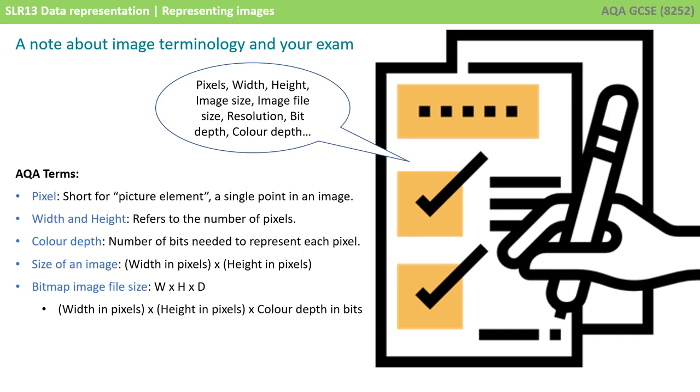So, for AQA, a pixel means a single point in an image. Width and height is referring to the number of pixels. The colour depth is the number of bits needed to represent each pixel. The size of an image refers to the width in pixels times the height in pixels, whereas the bitmap image file size is the width in pixels times the height in pixels times the colour depth in bits.